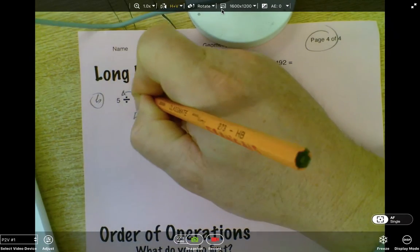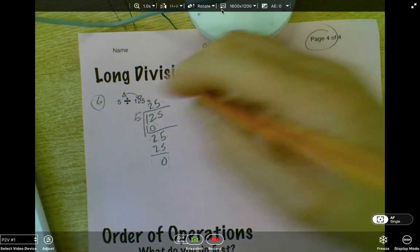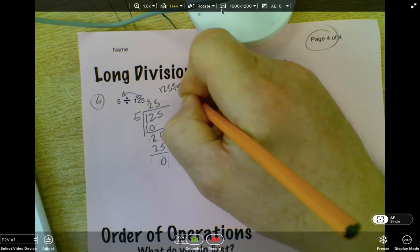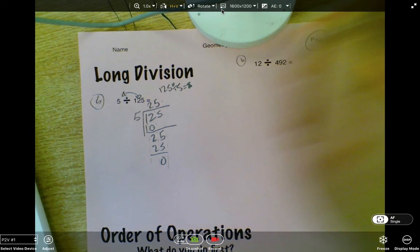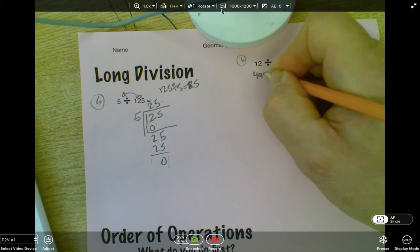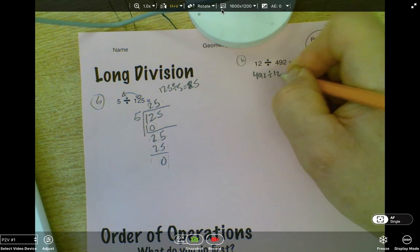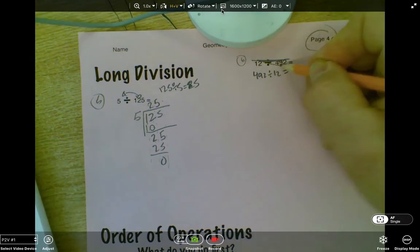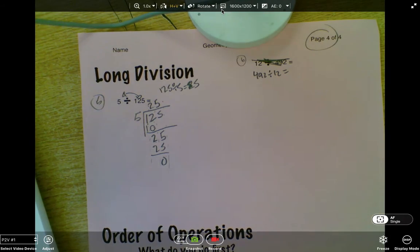I just realized, boys and girls, this should really be the other way around. It's really 125 divided by five equals 25. Sorry about that. It really should be 492 divided by 12. My apologies in advance. I'll fix that in class. We start with a large number, we divide other groups into that.